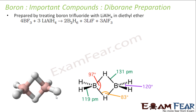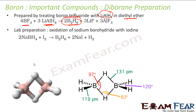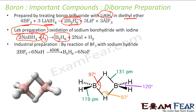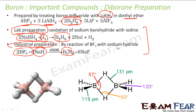Now let's talk about the preparation of diborane. It is prepared by treating boron trifluoride (BF3) with lithium aluminium hydride in diethyl ether to give B2H6. For lab preparation, you can take sodium borohydride and react with iodine to get B2H6. For industrial preparation, you react sodium borohydride with sodium hydride at around 450 Kelvin to get diborane on a large scale.